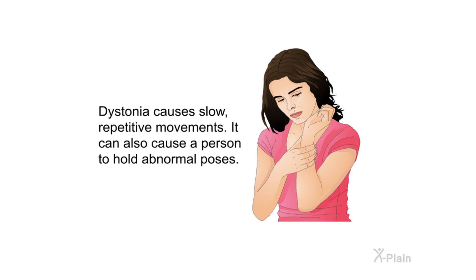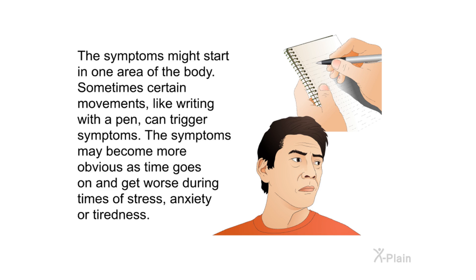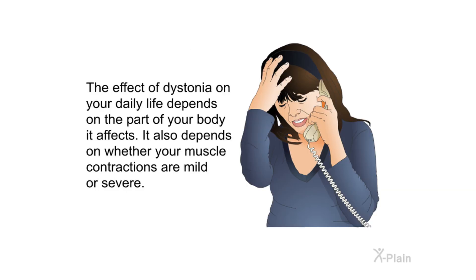Dystonia causes slow, repetitive movements and can cause a person to hold abnormal poses. The motions may be painful, and some people with dystonia may also have a tremor. Symptoms might start in one area of the body, and certain movements like writing can trigger them. Symptoms may worsen during times of stress, anxiety, or tiredness. The effect on daily life depends on which part of the body is affected and whether muscle contractions are mild or severe.